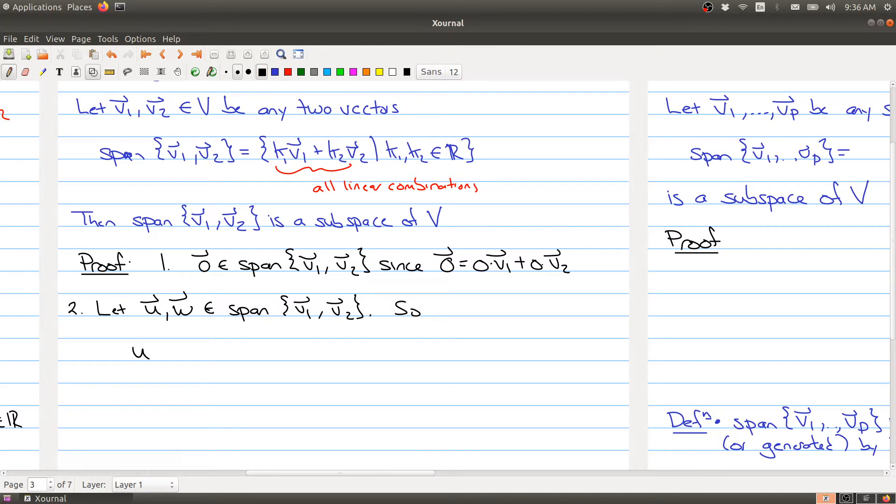Well, what do we know then about U and W? We know that U has to be equal to A times V1 plus B times V2, and W is some other linear combination of V1 and V2, C times V1 plus D times V2.